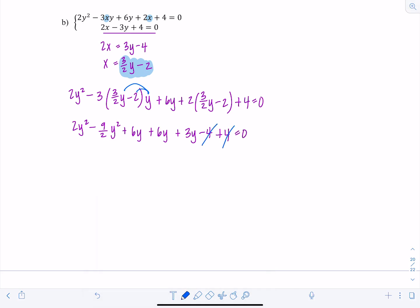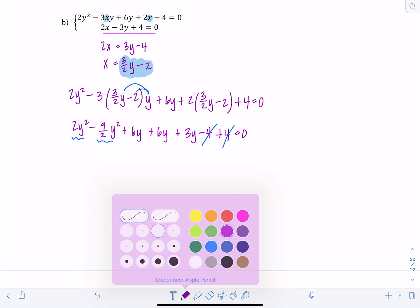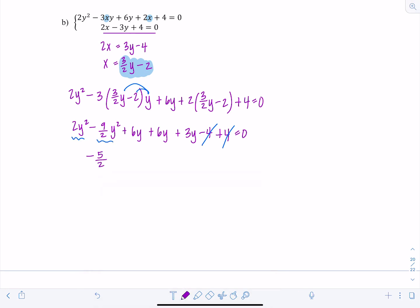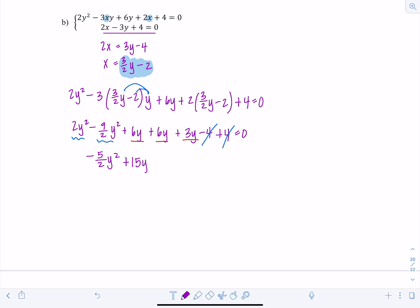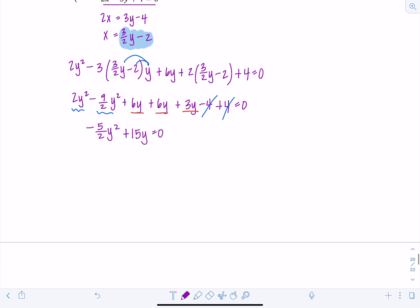And then these are like terms. So that's going to give me a negative 5 halves y squared. And then I have 6y, 6y, 3y. So that's 15y is 0. Now how do I solve from here? This is a quadratic equation.